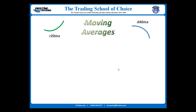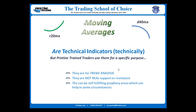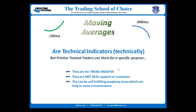Technically speaking, moving averages are technical indicators. They are the simplest form of the technical indicators, and pristine trained traders use them for a very specific purpose. In general, technical indicators are not beneficial to have on your charts, at least not if you're going to use them as a basis for entering your trade.